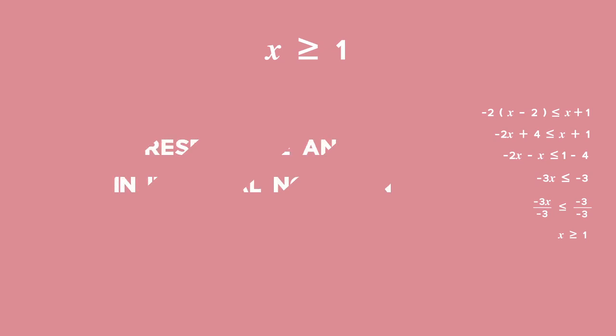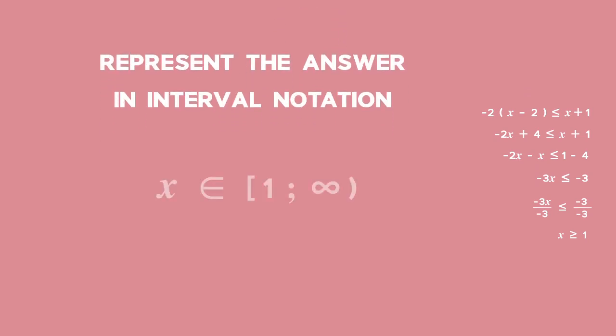Now, let's represent this answer in interval notation. x is an element, and because we're including the start point 1, we use square brackets. So x starts from 1, including 1, and goes all the way to infinity. We cannot include infinity, so we use round brackets.